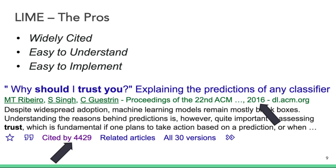When evaluating the usage of LIME, it is important to understand the pros and cons of the method. We will start with the pros. The first thing that LIME has going for it is that it is widely cited in the literature. At the time of this recording on Google Scholar, there were over 4,000 citations in the span of four years.